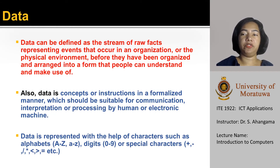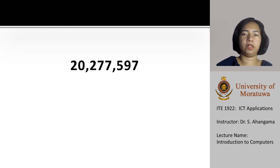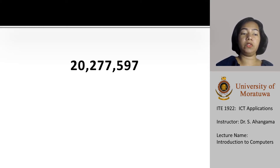Data is represented with the help of characters such as alphabets, digits, or special characters. Let us consider this example: 20,277,597. When you see this value, what do you understand? Do you find any meaning out of this? No. So, this is an example for data.